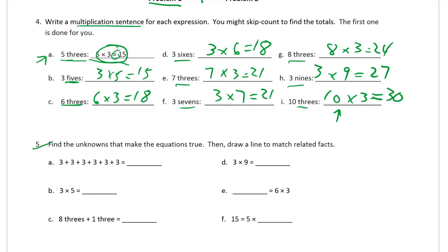Number five. Find the unknowns that make the equations true. Then draw a line to match the related facts. So here we have threes. One, two, three, four, five. We have six threes. We've been doing that one, right? Six threes. It's right there. We know that's going to be 18.